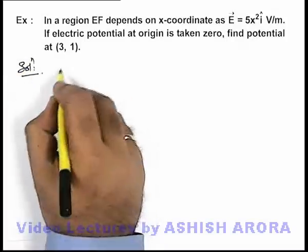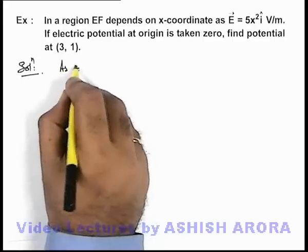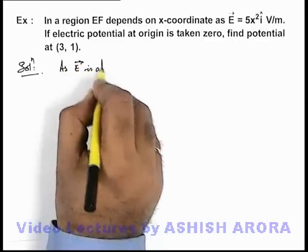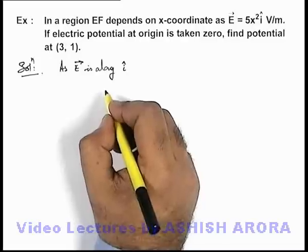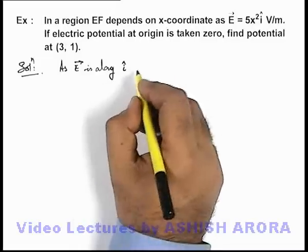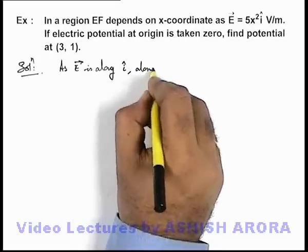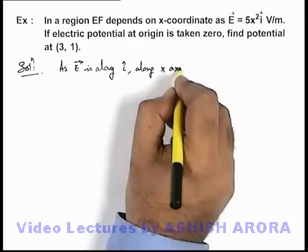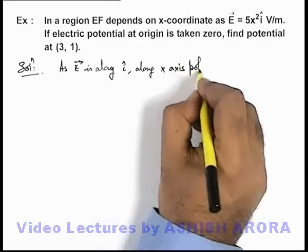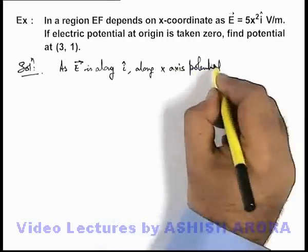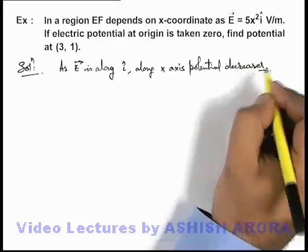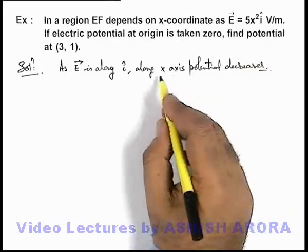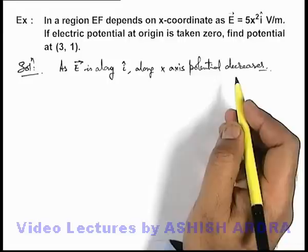Now in this situation we know that as E vector is along i cap, then we can say along x axis potential decreases, because we know that along the direction of electric field potential always decreases.